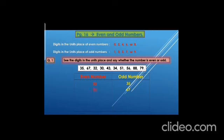43: in the units place we have 3, so what will it be? Odd number. Very good, children. Now 34: in the units place we have 4, so it will be an even number.